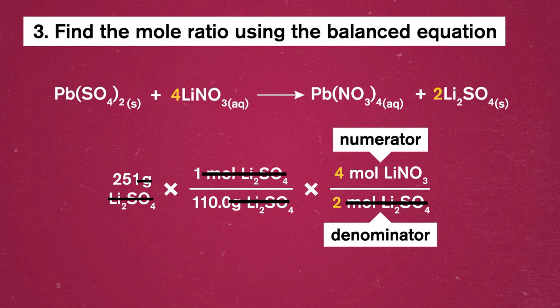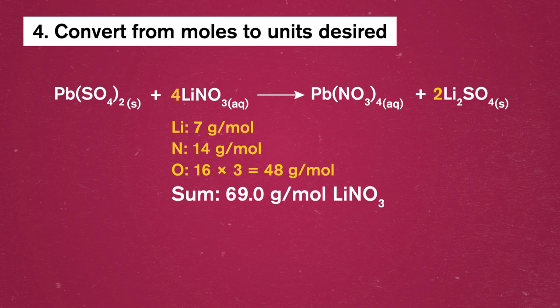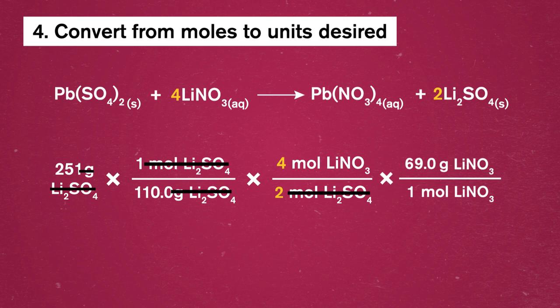Step four is to then convert from moles to the units we need, which would be grams of lithium nitrate. To do this, we need the molar mass of lithium nitrate, which we can get from the periodic table. Much like we did in step two, we can arrange our molar mass so that we have our desired units of grams in the numerator and the moles in the denominator so they'll cancel out.